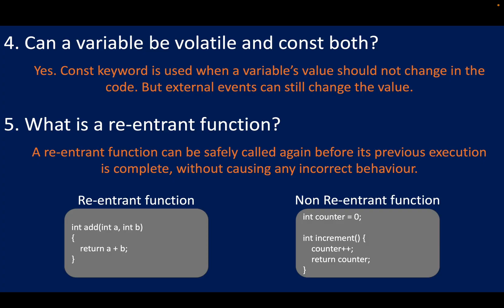The fourth question: can a variable be both volatile and const? Yes. The const keyword is used when a variable's value should not change in the code. But if you want that variable to be changeable by external devices or external events, then volatile is used. Hence, a variable can be both volatile and const.